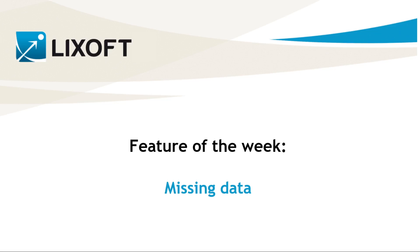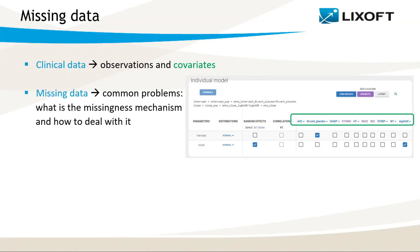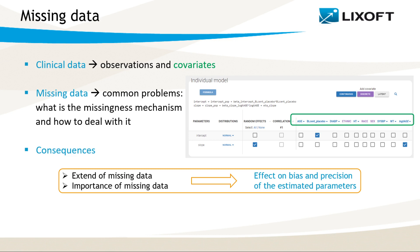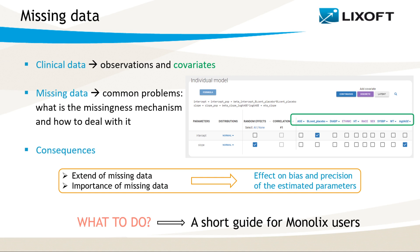Today's feature of the week video is about missing data. Nonlinear mixed effects methods are applied to clinical data to better understand PKPD characteristics. Typical datasets include not only observations, but also covariates, because they can explain some of the variability between individuals. Unfortunately, almost every dataset of at least moderate size has some missing data, and one of the most difficult tasks is how to handle it. It has to be done carefully to avoid bias in parameter estimation and to keep the high precision of the model. How much a model will be affected depends on how much of the data is missing, why it is missing, and how important it is for overall analysis. This video is a short guide on general good practices and how Monolix treats missing data.